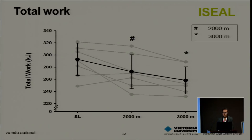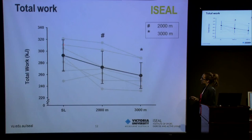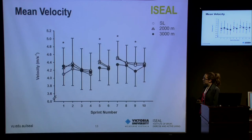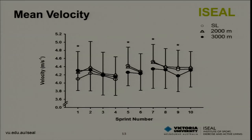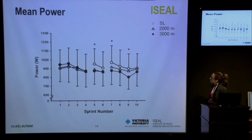For total work across the entire protocol in kilojoules, individual responses are shown in grey and mean data in bold. There was an 8% reduction in total work at 2,000 metres and a 13% reduction at 3,000 metres. For mean velocity per sprint effort, there were no differences at 2,000 metres. At 3,000 metres, initial sprint performance was 5% higher; however, in sprints 5, 7 and 9, mean velocity was reduced. Mean power was similarly reduced at sprints 5, 7 and 9.